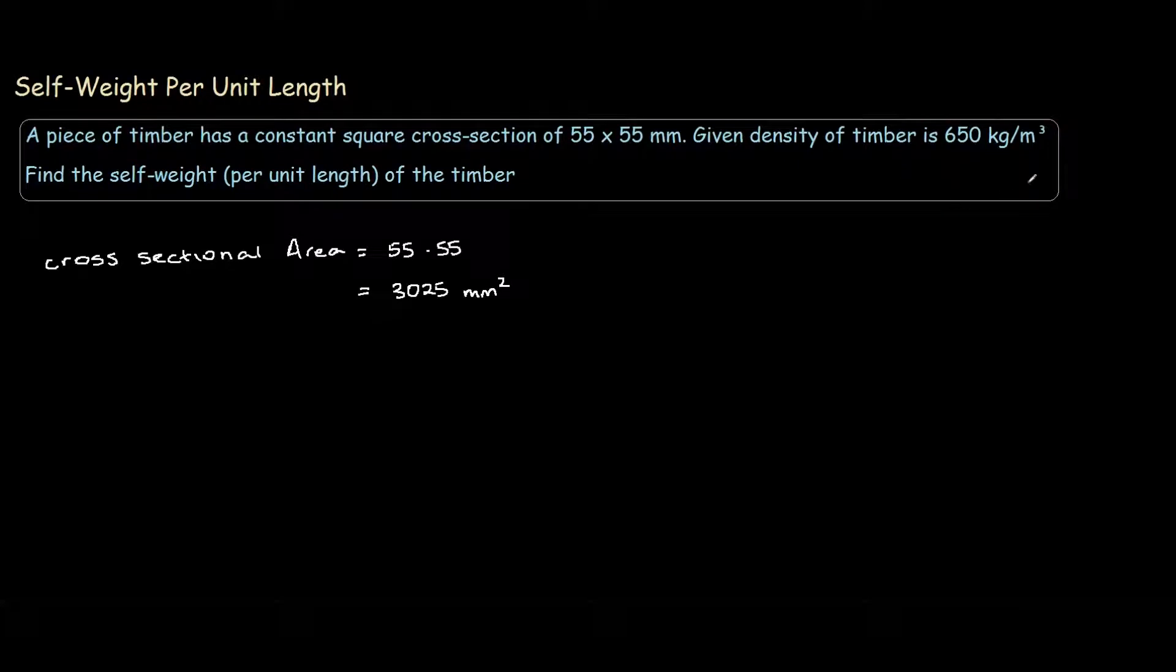Since our density is given in kilograms per meter cubed, we want to work in meters. To convert millimeters squared to meters squared, we multiply by 10 to the negative 6.